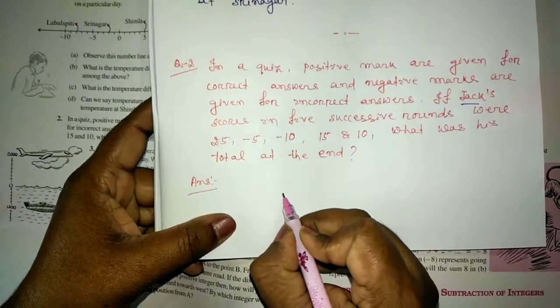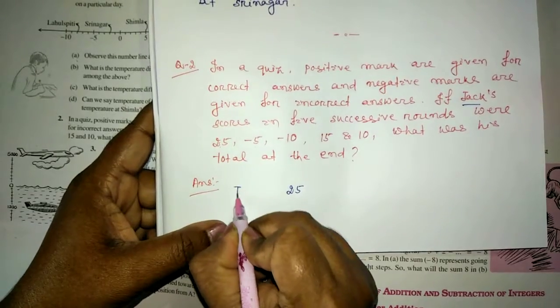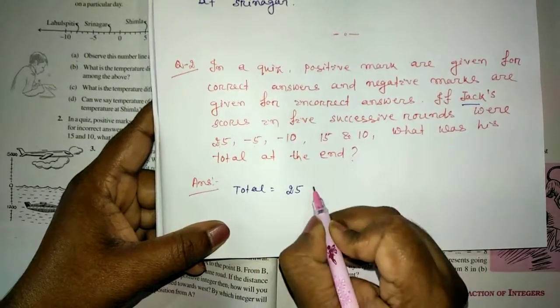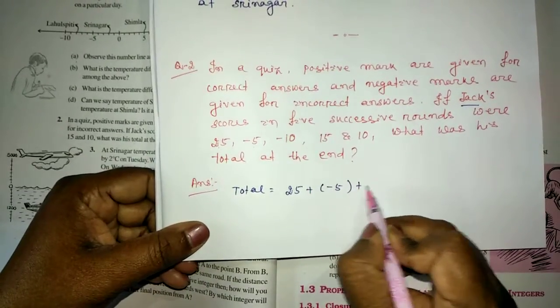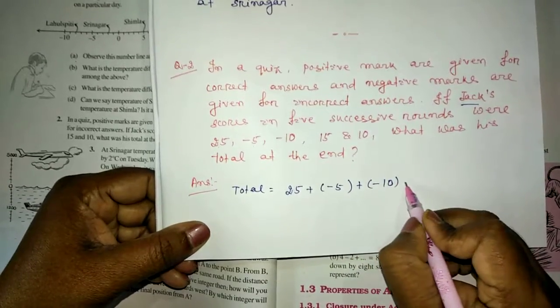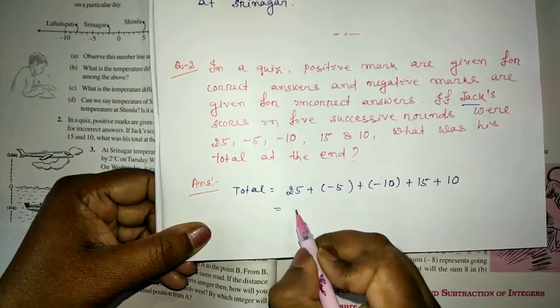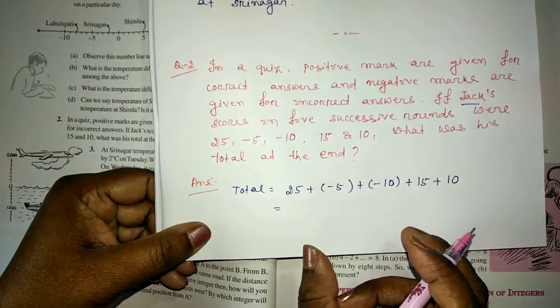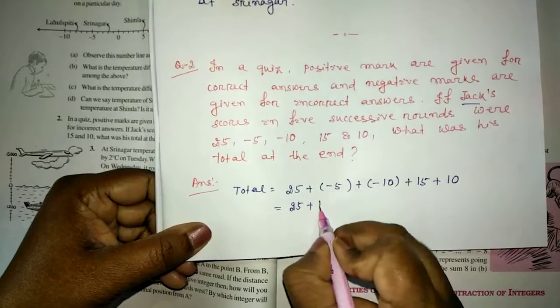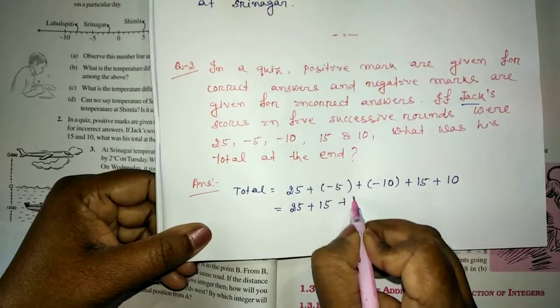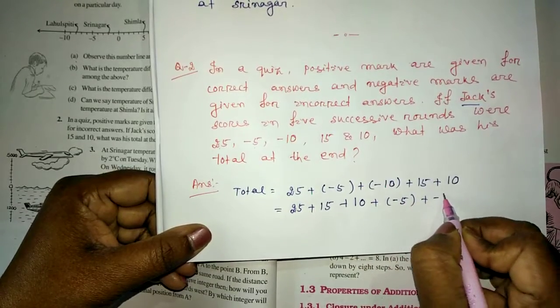Here is the answer. His total score is 25 plus minus 5 plus minus 10 plus 15 plus 10. We will arrange positive integers together and negative integers together: 25 plus 15 plus 10 plus minus 5 plus minus 10.